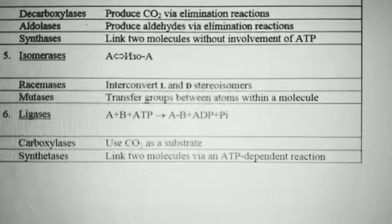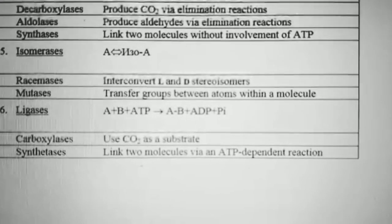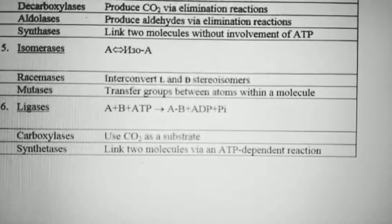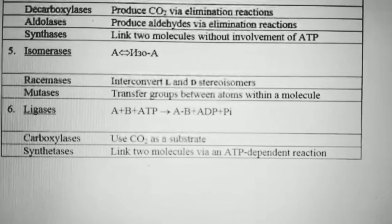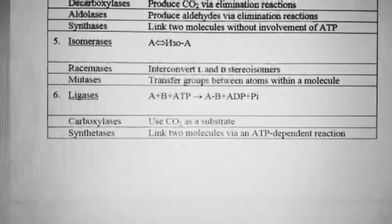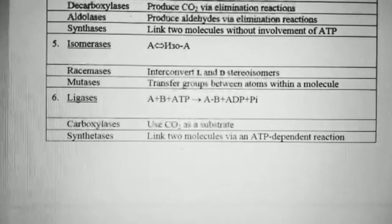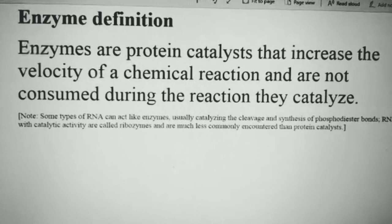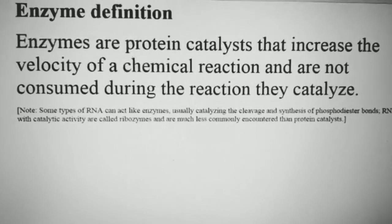Isomerases are involved in the interconversion of a substrate into its respective isomers — compounds with the same chemical formula but different arrangements. Racemases are involved in the interconversion of levorotatory and dextrorotatory stereoisomers. Mutases transfer groups between atoms within a molecule. Ligases involve the bonding of two molecules: carboxylases use carbon dioxide as a substrate, and synthetases use ATP-dependent reactions for linking two substrates.